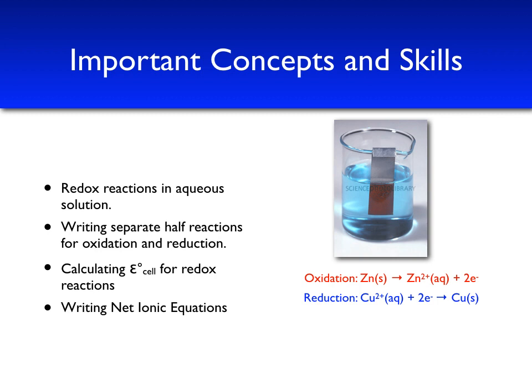If we add these half reactions together, we get an overall reaction that shows that copper 2 plus plus zinc solid yields copper solid and zinc ions. Notice that this is a net ionic equation. The sulfate ion, which is the spectator ion, does not appear in this reaction.